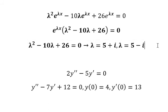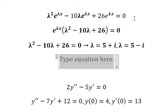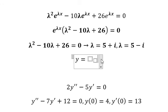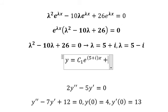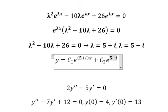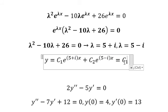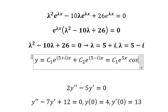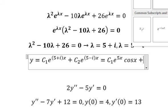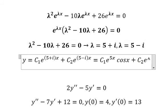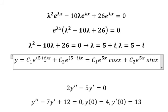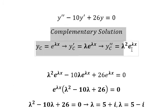So we have y equals c₁ e to the power of (5+i)x plus c₂ e to the power of (5-i)x. In this situation we can rewrite this as c₁ e to the power of 5x cos(x) plus c₂ e to the power of 5x sin(x), since the coefficient of i is 1.